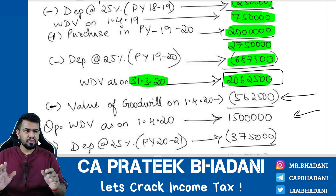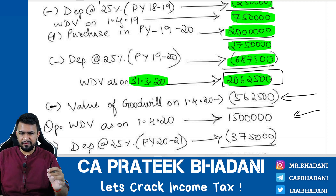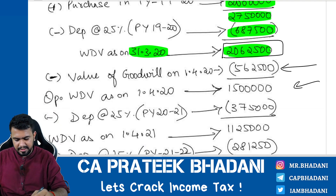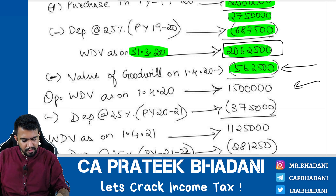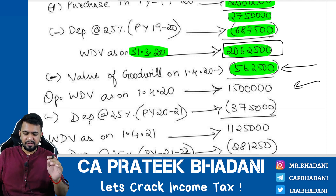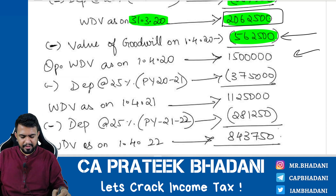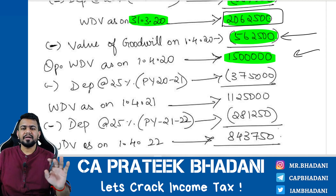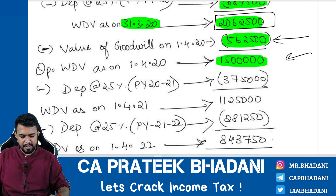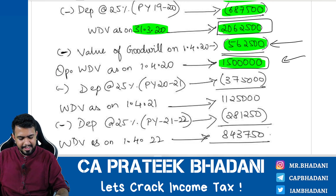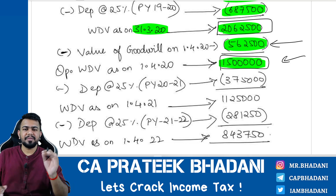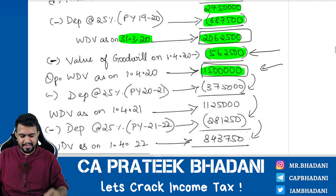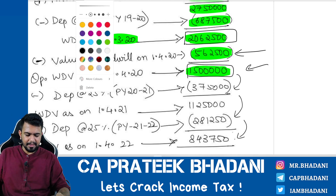Now you have the WDV as on 1.4.2020 for goodwill (₹5,62,500) and for the total intangible block. Since goodwill should not be a depreciable asset from 1.4.2020 onwards, reduce the goodwill WDV from the intangible asset block. Reducing ₹5,62,500 gives a balancing figure of ₹15 lakh. This ₹15 lakh is the value of the intangible asset block which does not include goodwill. Goodwill has been successfully eliminated, and from here onwards you calculate depreciation normally.